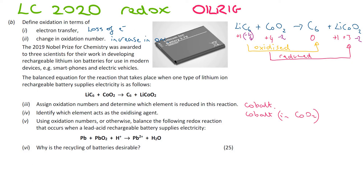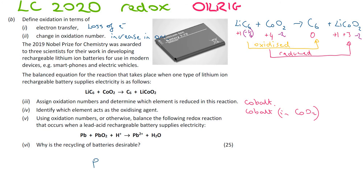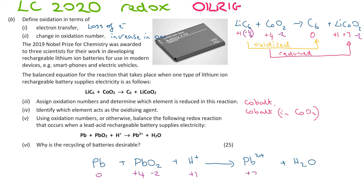Using oxidation numbers or otherwise, balance the following redox reaction. We have lead and lead oxide plus the hydrogen ion forming lead ions and water. Assigning oxidation numbers: lead as an element is zero; in PbO₂, oxygen is minus two with two oxygens so lead must be plus four; the hydrogen ion charge is plus one; the lead ion Pb²⁺ is plus two; and in water, oxygen is minus two and hydrogen is plus one.